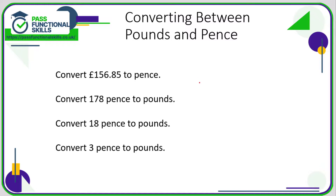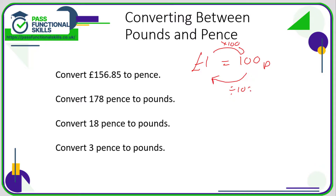Converting between pounds and pence should be fairly easy. Hopefully you know that one pound equals 100 pence. So pounds to pence: multiply by 100. Pence to pounds: divide by 100. The only issue might be where there are decimal points involved.